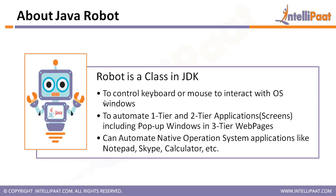Robot is used in scenarios where you can't automate using Selenium WebDriver. The reason is that in such cases you can't find the properties of those desktop elements — you can't inspect them. So since you can't inspect the properties, you can't automate them, and that's where Robot class methods come in.